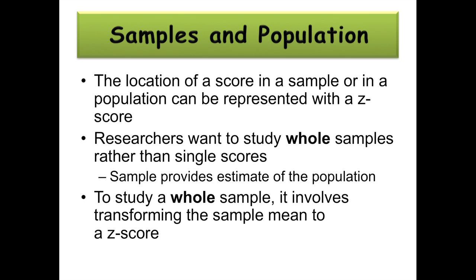Location of a score in a sample or in a population can be represented with a z-score. But the issue with z-scores is you're only looking at one score, one person's raw score. Researchers want to study whole samples rather than just single scores or single individuals. Samples provide a better estimate of the population, and studying a whole sample involves transforming the sample mean as a group to a z-score. That's what this chapter is going to go over.